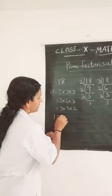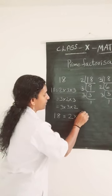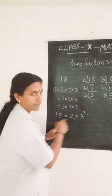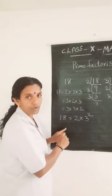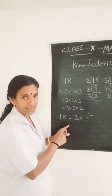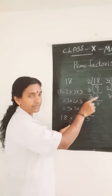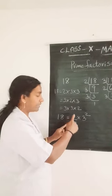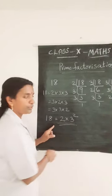You got the answer: 18 equals 2 coming 1 time only and 3 coming 2 times. So, you have to represent the prime factorization of 18 as 2 into 3 square. 3 coming 2 times means you can represent it as 3 square. And 2 first, then 3 — that is ascending order of prime factors. You can do the division in any order, but the final representation is in the ascending order of prime factors. So, the answer is 2 into 3 square.